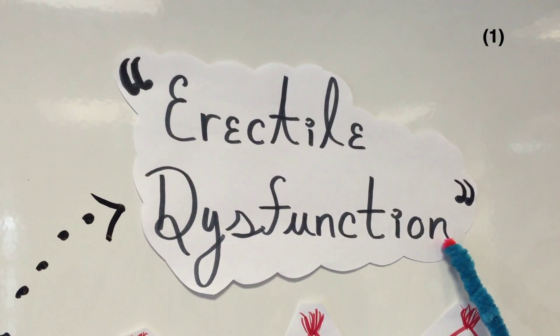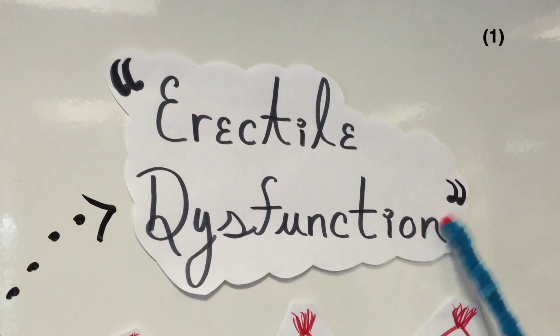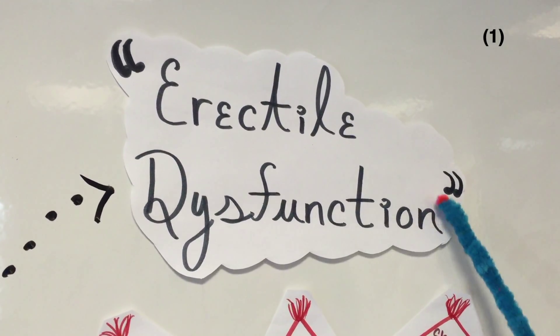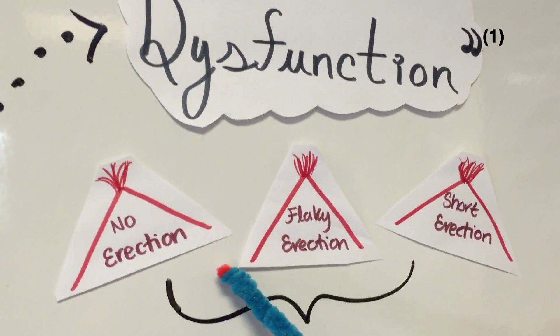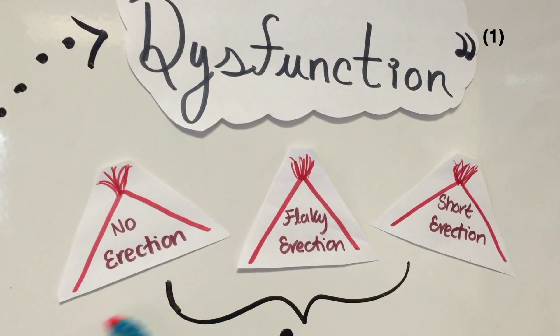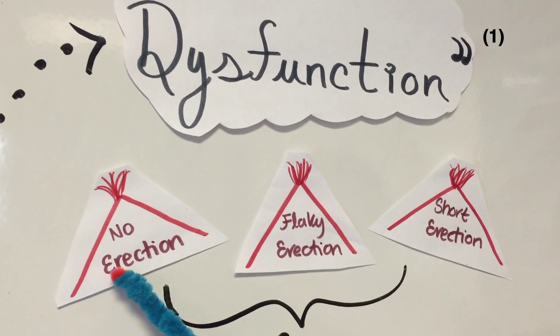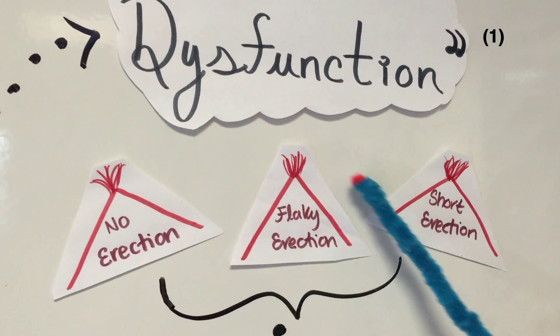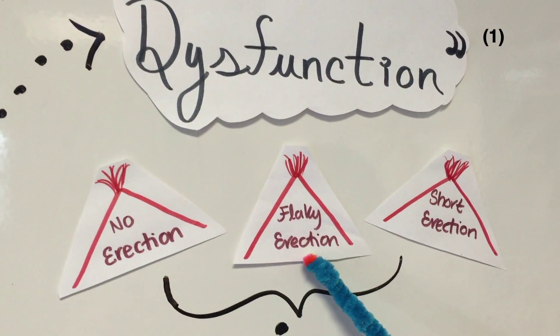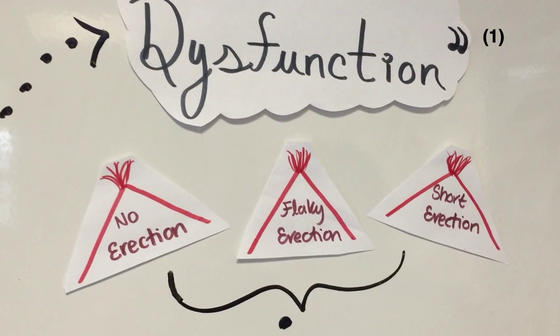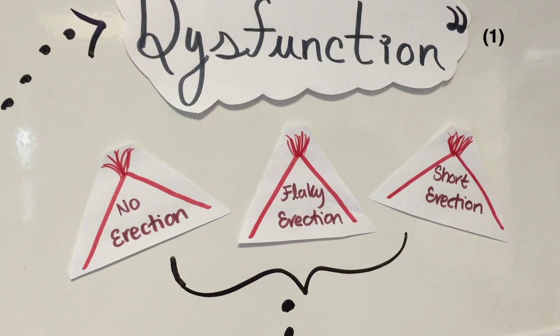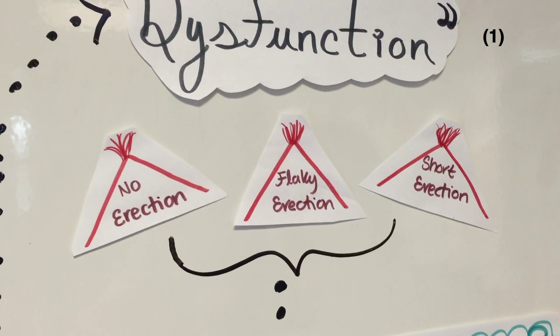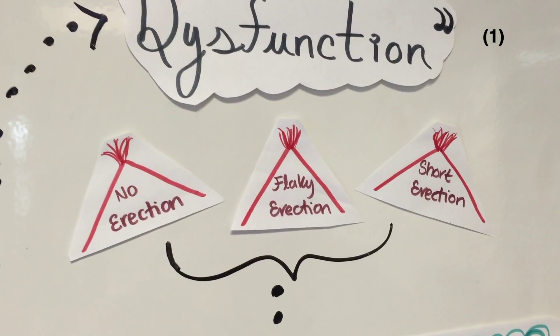Erectile dysfunction is the medical jargon used to explain the inability to get or keep an erection for sexual function. By this definition, those who suffer from erectile dysfunctions may never be able to get an erection, they can get an erection but it's short-lived, or they can get an erection but it could be unpredictable or even flaky. Regardless of which camp you're in, you need not fret too much. It is one of the most common sexual problems for men and tends to become more common as men age.